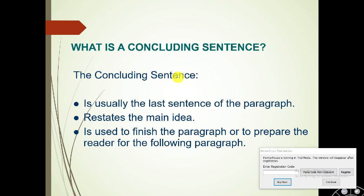What is a concluding sentence, or closing sentence? The concluding sentence is usually the last sentence of the paragraph. The topic sentence comes first, while the concluding sentence comes at the end. It restates the main idea — the same idea presented in the topic sentence — and is used to finish the paragraph or to prepare the reader for the following paragraph.